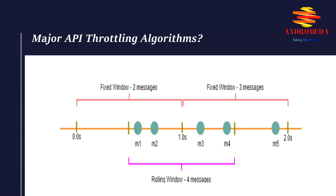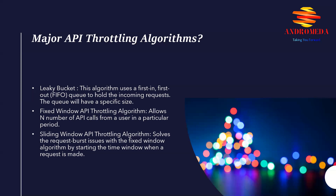The sliding window API throttling algorithm solves the request burst issue of the fixed window algorithm by starting the time window when a request is made. For instance, if the system only allows two requests per minute, unlike the fixed window, the time window starts only when a user actually makes the first request. The timestamp of the first request is saved with the counter and the user is allowed to make one more request within that minute. The sliding window algorithm combines the advantages of both the leaky bucket and fixed window algorithms, eliminating issues with both: newer requests don't starve, and unlike the fixed window, a burst of requests doesn't overwhelm the system.